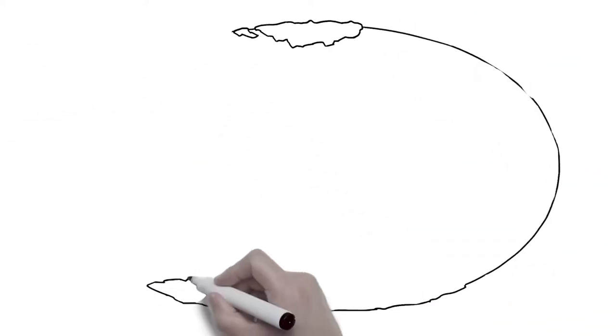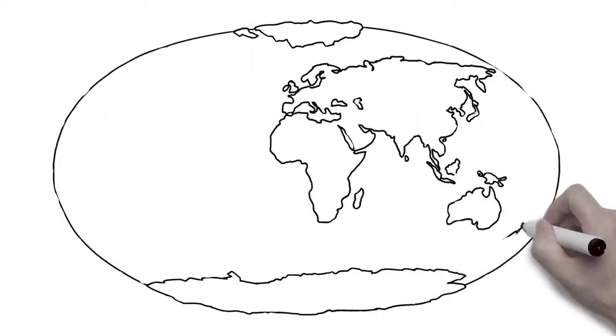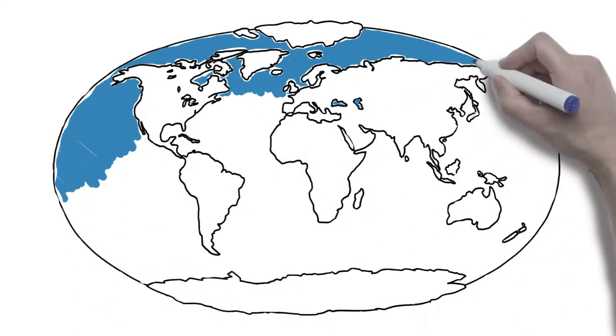Because of teleconnections, the poles influence weather and climate conditions in lower latitudes, where hundreds of millions of people live.